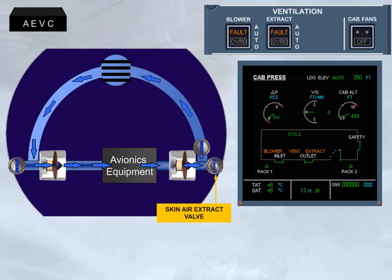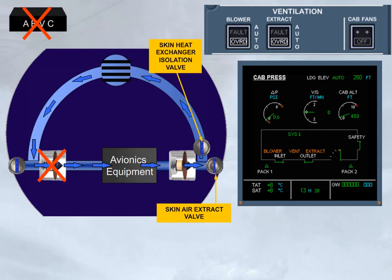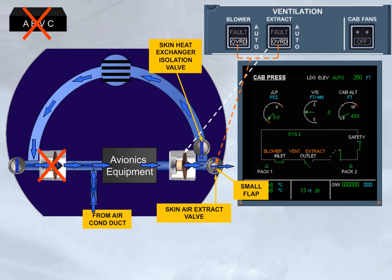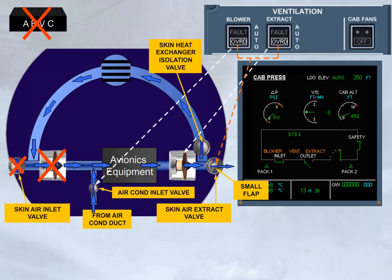On ground, in case of AEVC failure, both fault lights come on. Setting both push-button switches to override allows the ventilation system to be reconfigured by keeping the skin exchanger isolation valve open, by opening the small flap of the closed skin air extract valve, by transferring the control of the extract fan to the push-button switch, and by adding air from the air conditioning duct through an air conditioning inlet valve. Note, as the control of the skin air inlet valve is lost, its position will be the one before the fault occurs.